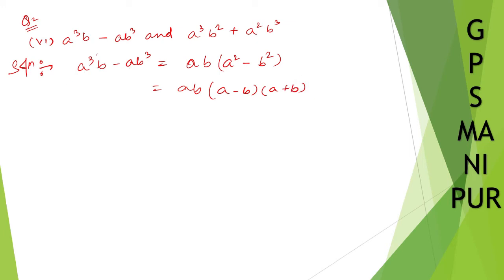The next question, a cube b square plus a square b cube. From these two, take a square b square common. So if you take a square b square common, then from here what's left out will be a plus, and from here one b is left. So a square b square times a plus b.